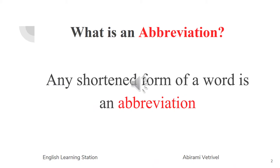Now let us understand what an abbreviation is. An abbreviation is nothing but a shortened form of a word. They are used in writing in order to save time. Abbreviations must be appropriate to the context in which they appear. Also, abbreviations must be internationally accepted standard form.